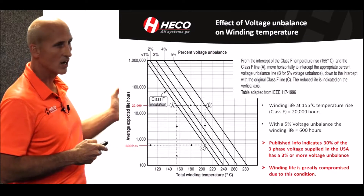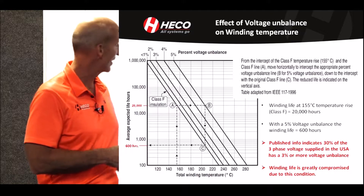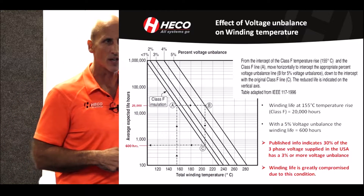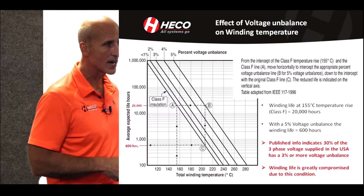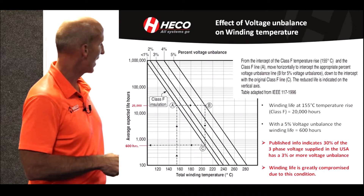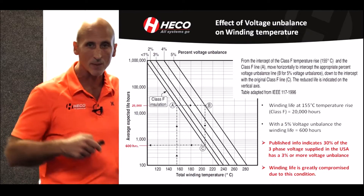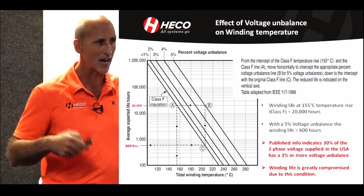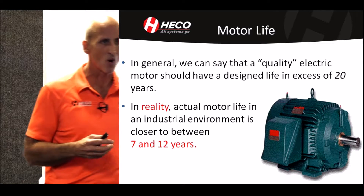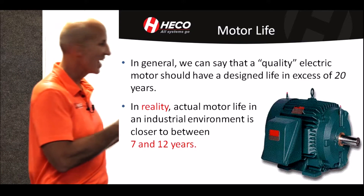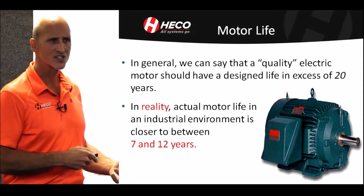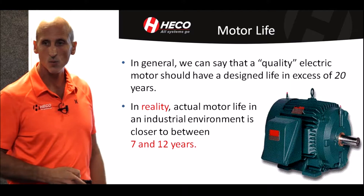This is an example of motor winding life with phase unbalance. I said 5% could really result in a big problem. A normal motor at 155°C with class F insulation calculates out to about 20,000 hours. With a 5% unbalance, the motor is only going to operate approximately 600 hours. It will heat up that rapidly and fail. Motors in general — a quality motor is going to last in excess of 20 years, maybe longer. In reality, because of all these different factors, in a lot of cases you'll get a lifespan much less than what was expected.